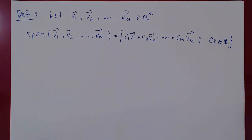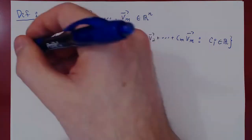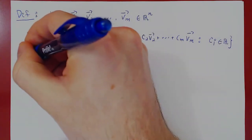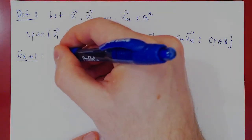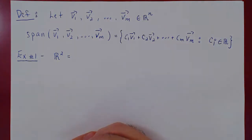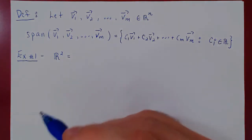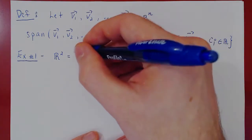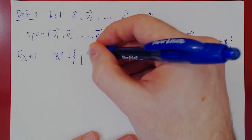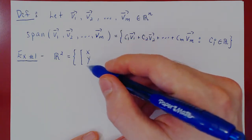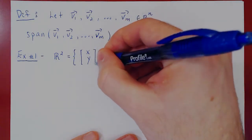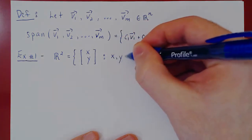That's what the span is. Let's consider three simple but key examples, and then we'll ask a fundamental question. First, let's look at R2, the xy-plane. We will not look at R2 as tuples of real numbers, but as column matrices of length 2. So R2 is the set of all column matrices where the first entry is the x component and the second entry is the y component, with x and y ranging over all real numbers.